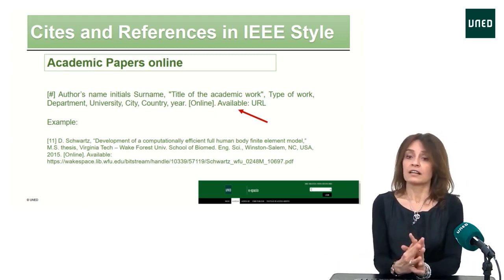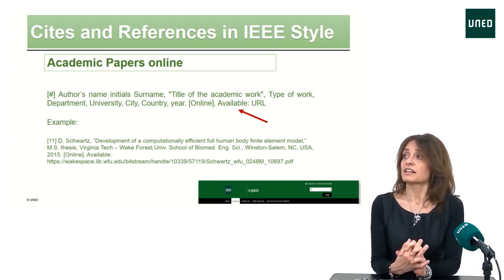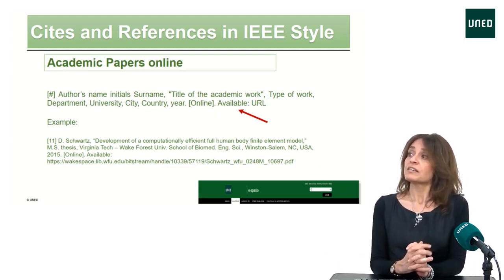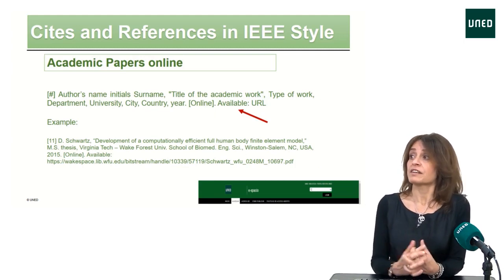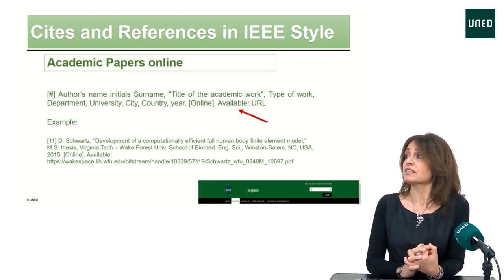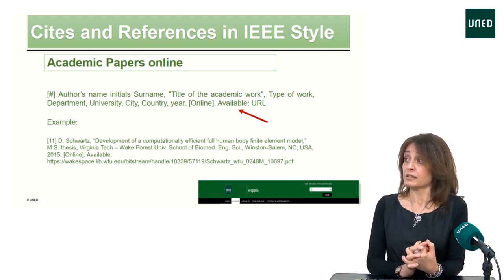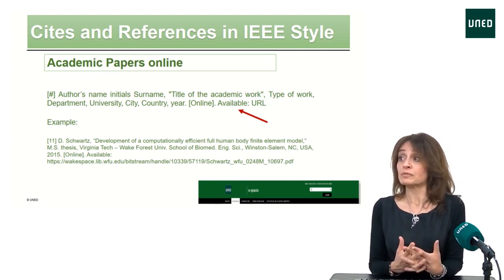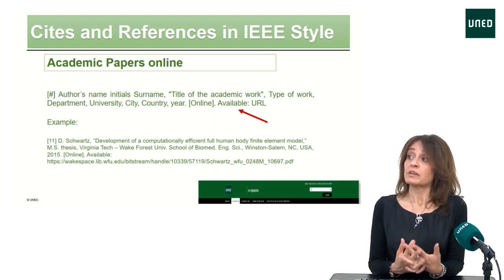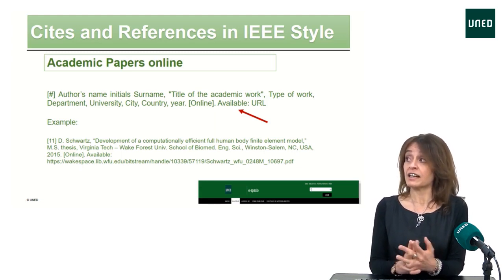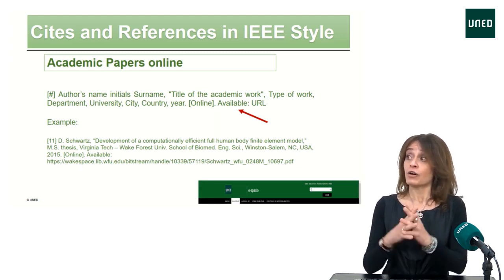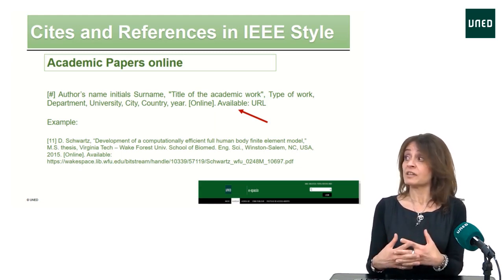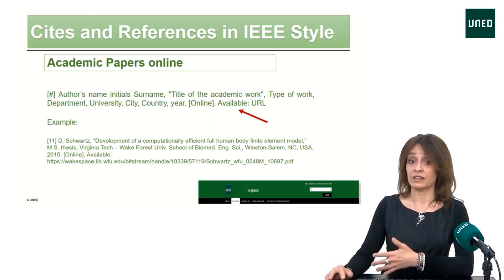If we are citing academic papers online, the author is cited as usual, followed by the title of the academic work in quotation marks, the type of work, the department, university, city, country, year, and we add 'online' in square brackets with the URL.